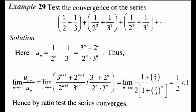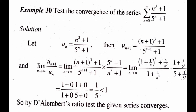Our next example: test the convergence of the series sigma from n=0 to infinity of (n³+1) / 5^(n+1). Let the nth term u_n = (n³+1) / 5^(n+1). Then u_(n+1) = ((n+1)³+1) / 5^(n+2). The limit as n tends to infinity of u_(n+1)/u_n equals the limit of [((n+1)³+1) / 5^(n+2)] × [5^(n+1) / (n³+1)].